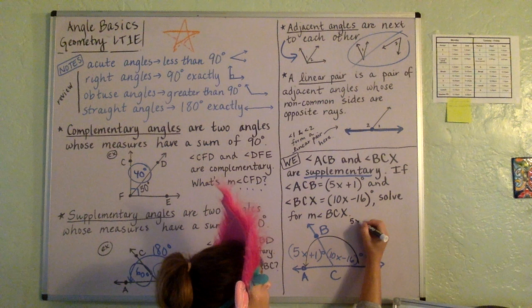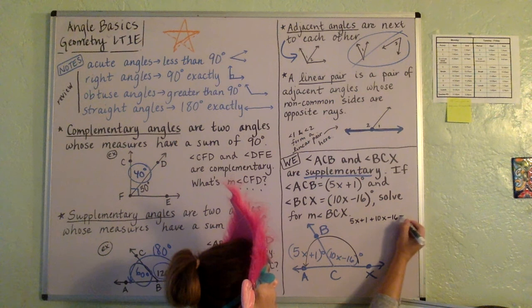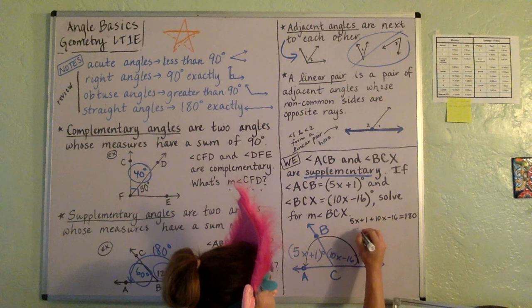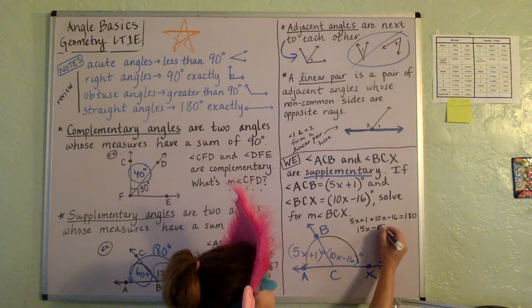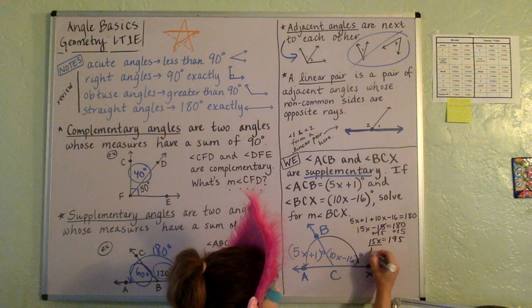So these two together are supplementary, and they add to 180. Well, then that means our equation is going to be 5X plus 1 plus the 10X minus 16, and that should equal 180 degrees. So 5X and 10X is 15X. Negative 16 plus 1 is minus 15. And we'll go ahead and add the 15 and add the 15, and we'll get 15X equals 195.